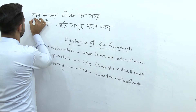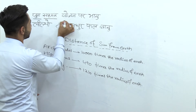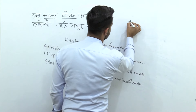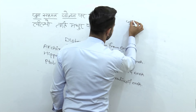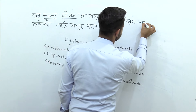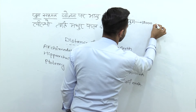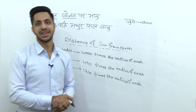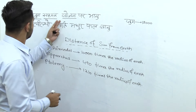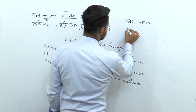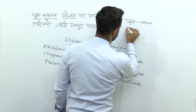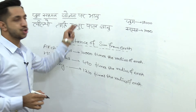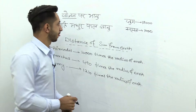Yahaan pe yeh teen words hain: 'jugg sahistr jogen.' Agar main 'jugg' ki baat karu, toh jugg yahan kehta hai this is approximately twelve thousand years — twelve thousand divine years hota hai. Toh jugg ka matlab hai twelve thousand. 'Sahistr' is a kind of multiple jo hota hai — thousand.